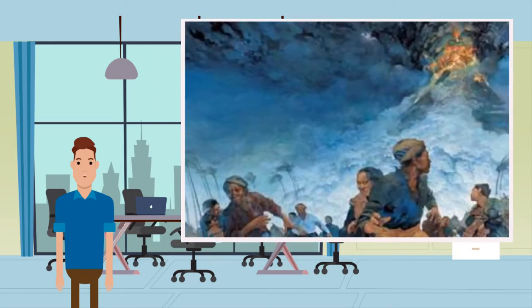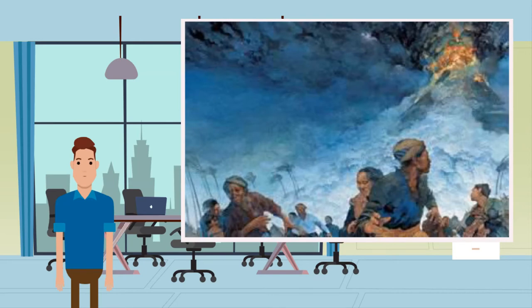Examples of volcanic winters: In 1783, Laki, Iceland — the year after the eruption, northern hemisphere temperatures fell by about 1 degree Celsius, resulting in severe weather; 8,000 additional deaths in the UK were recorded in the winter of 1783 to 1784, and severe weather continued for several years in Europe. In 1815, Mount Tambora, Indonesia — the eruption caused global temperatures to fall by 0.4 to 0.7 degrees Celsius, resulting in crop failures and famines. 1816 was commonly referred to as the 'Year Without a Summer'.